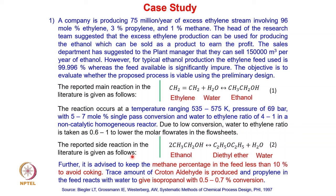To understand this concept, let's take a simple illustrative example taken from the textbook Systematic Methods of Chemical Process Design. A company is producing 75 million per year of an excess ethylene stream, which involves 96 mole percent ethylene, 3 percent propylene, and 1 percent methane. The objective is how this excess ethylene can be used to produce a different product that the company can sell to earn profit.